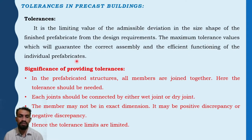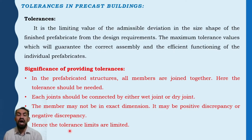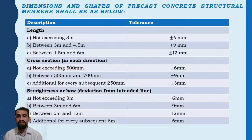The significance of providing tolerances in prefabricated structures: all members are joined together, so tolerances are needed. Each joint should be connected by either a wet or dry joint. The member may not be in exact dimension — it may have a positive or negative discrepancy — hence tolerances are limited to some limit. We also need to consider the type of joint condition and how it is jointed.